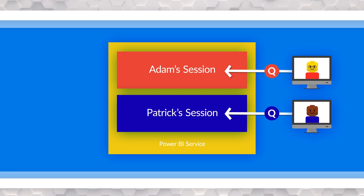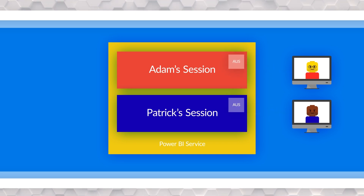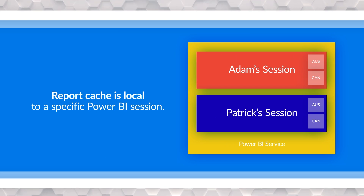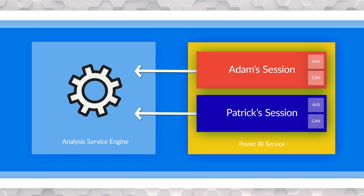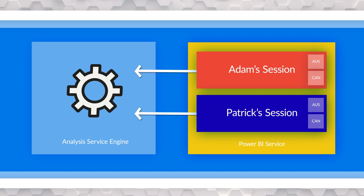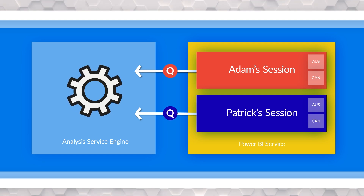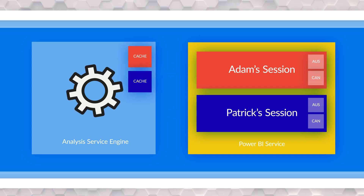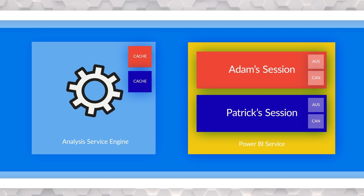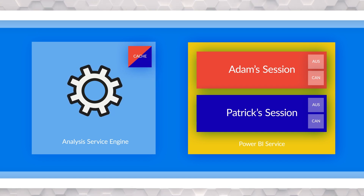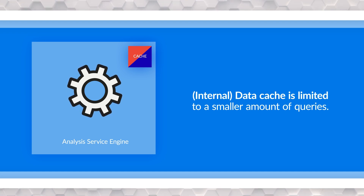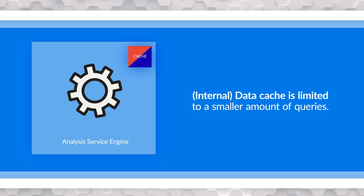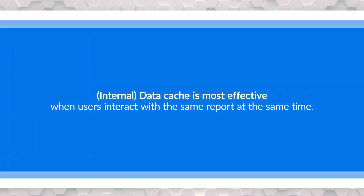Adam is working from his PC and Patrick is in a completely different place. When they run these queries, they're running over the same service. However, the report cache is local to the session — when Patrick runs the same report, his report cache is a different one. However, both Adam and Patrick use the very same Analysis Services engine, so DAX queries from both go to the same place. The storage engine cache on Analysis Services is shared across all connections. While the report-level cache could be very large, the service-level data cache is limited to a smaller number of queries — making it really important only when you have a large table and many users querying the same data simultaneously.